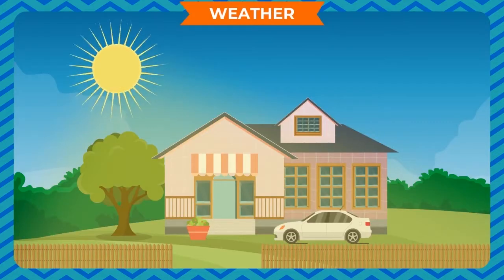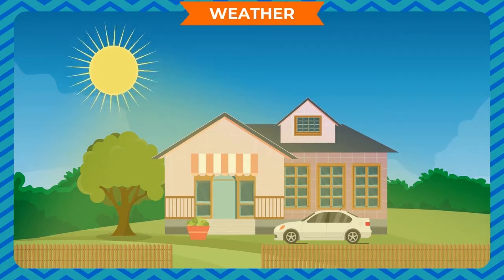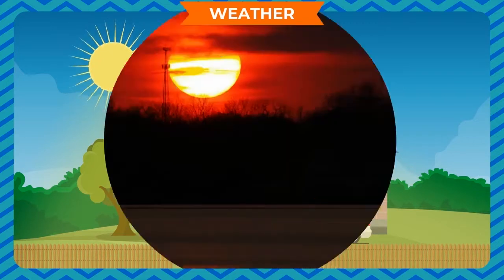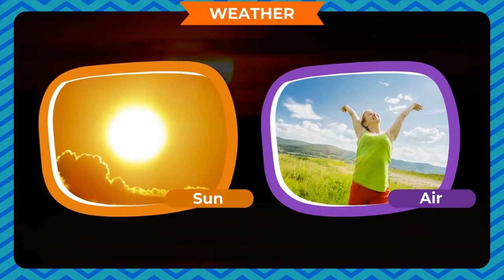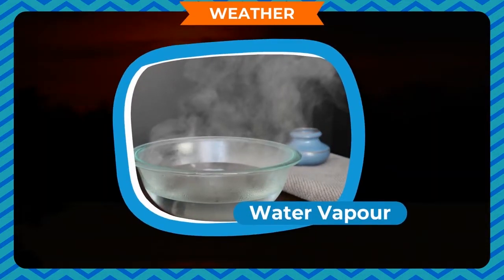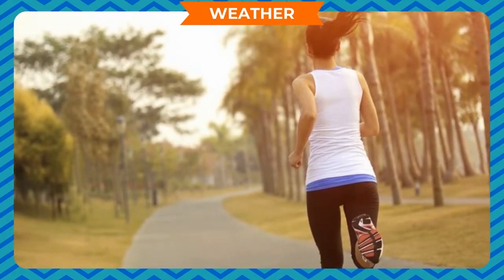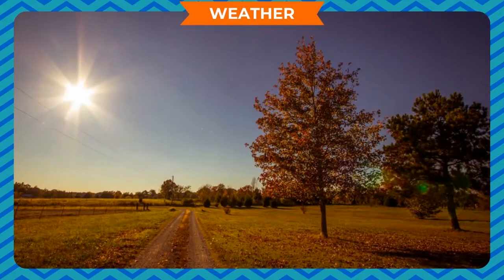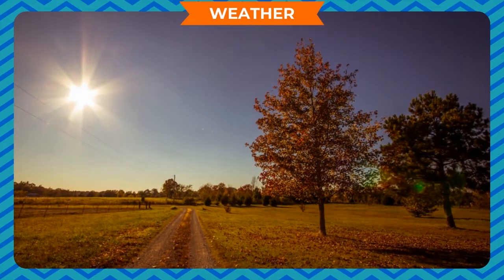Weather. On a sunny day, we feel very hot because the sun shines brightly and warms the earth. In the evening when the sun sets, we do not feel so hot. The sun, air and water vapor in air affect the weather. Mostly we feel cold air in the morning and evening, and hot air in the afternoon.